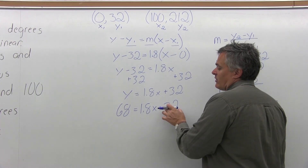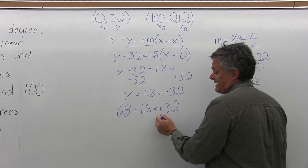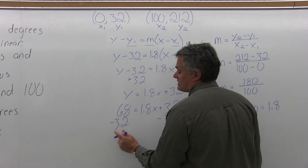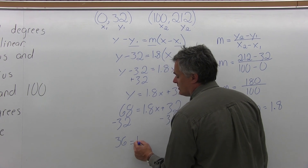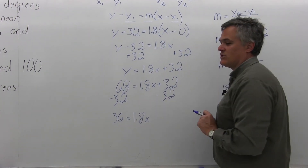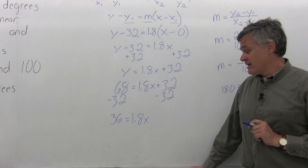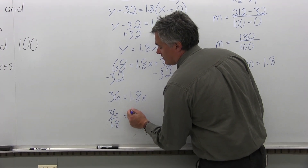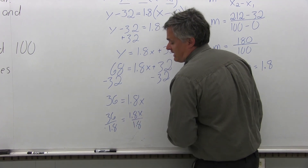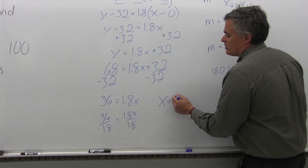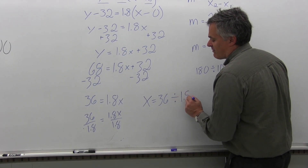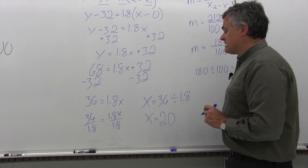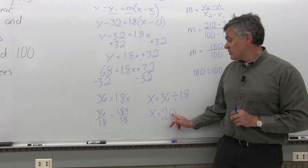Now I solve for x. First, subtract 32 from both sides. On the left, 68 minus 32 is 36, giving 36 equals 1.8x, with the 32 terms on the right canceling. Then divide both sides by 1.8: 36 divided by 1.8 equals x. Running that through a calculator gives x equals 20. So 68 degrees Fahrenheit is the equivalent temperature of 20 degrees Celsius.